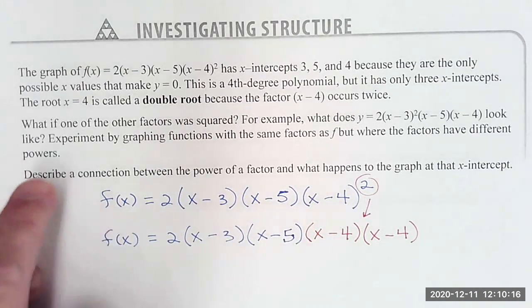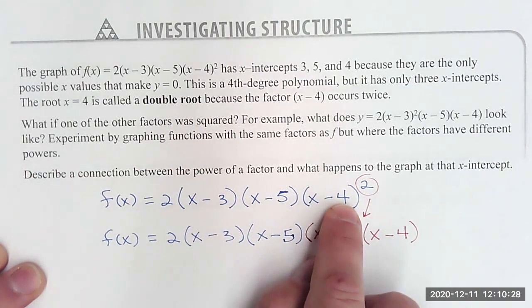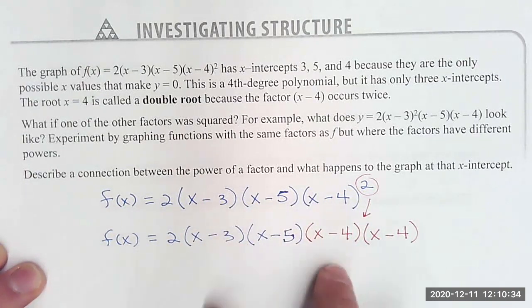So if you follow these steps, it's asking you what if the other factors, what if one of the other factors was squared? What if it wasn't (x - 4) that was squared? What if it was (x - 5)? What was (x - 3)? Well, I want you to write up something. Let me know what happened when you square those other factors. What did you notice?